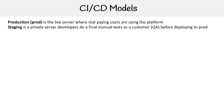We are looking at the CI/CD models. Before we jump into those models, I want to talk about a couple of terminologies. Production, short for prod, is the live server where real paying users are using the platform. And staging is a private server where developers do a final manual test as a customer, which we call QA — short for quality assurance — before deploying the code to production. So it's like that last check. So if you see staging and production and wonder what those mean, those are those terms.